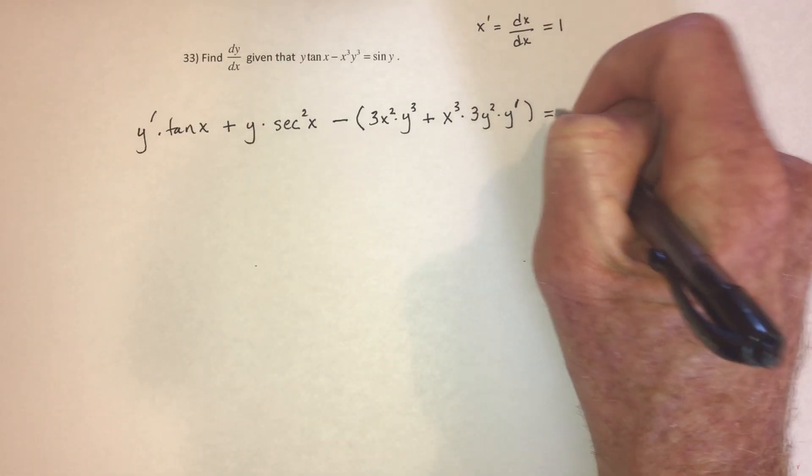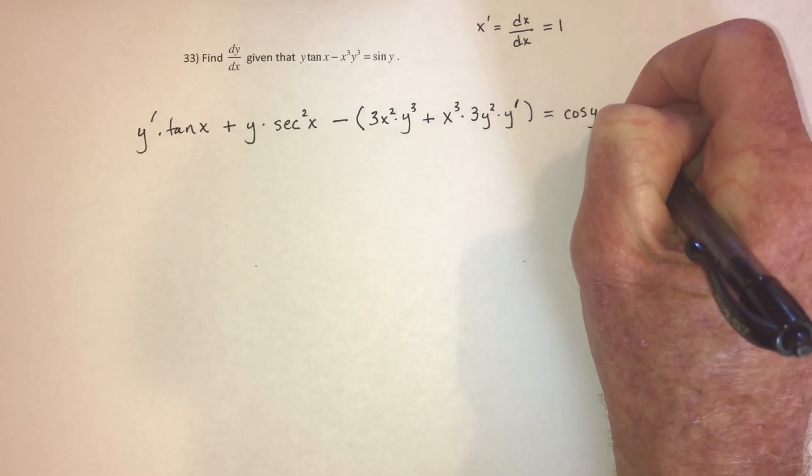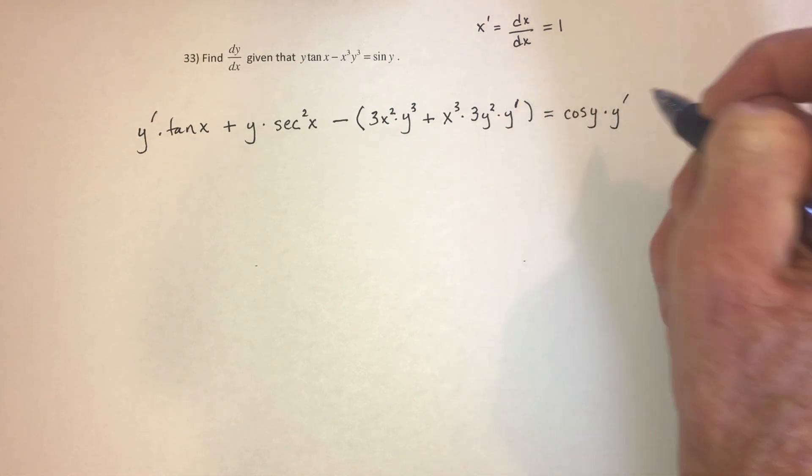And then on the right side, the derivative of sine is cosine. And then do the chain rule. Take the derivative of y.